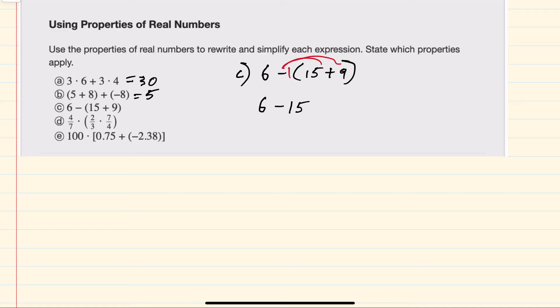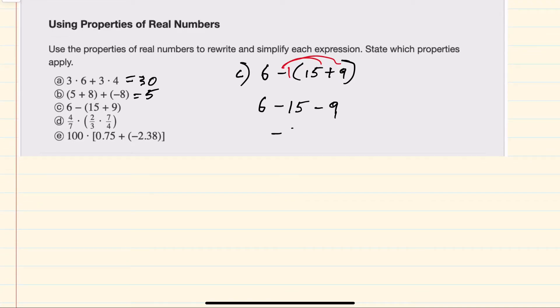and then negative 1 times a plus 9, a minus 9. 6 minus 15 gives us a negative 9 minus 9, or negative 18.